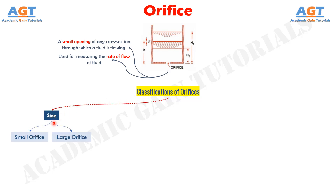Number 1: the orifices are classified as small orifice or large orifice depending upon the size of the orifice and head of liquid from the center of the orifice. If the head of liquid from the center of the orifice is more than 5 times the depth of the orifice, it is called a small orifice. If the head of liquid is less than 5 times the depth of the orifice, it is known as a large orifice.